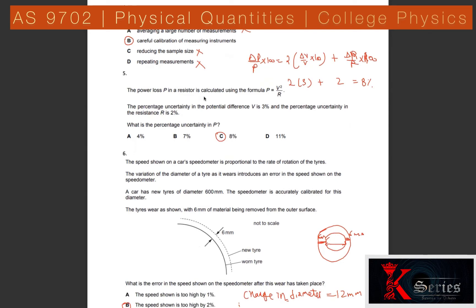Question 5: Using P = V²/R again. The power on V is 2 and on R is 1. The percentage uncertainty in V is 3% and in R is 2%. So: 2×3% + 1×2% = 6 + 2 = 8%. The total percentage uncertainty in P is 8%.